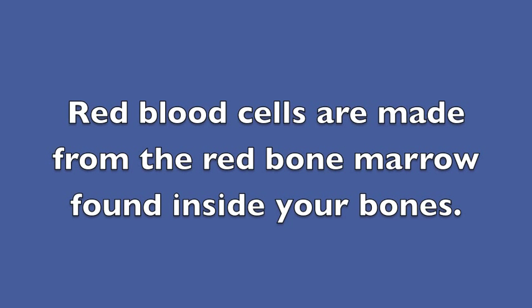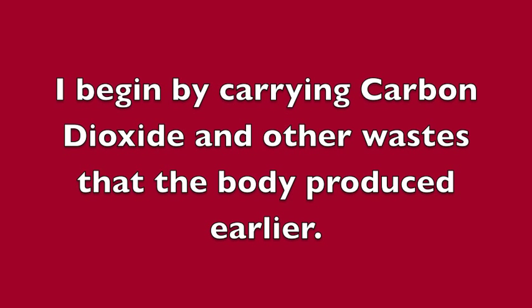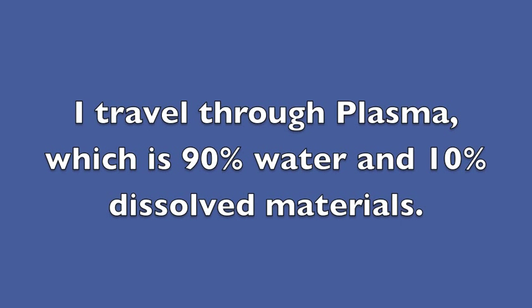My story begins in the red bone marrow found inside your bones. The plan is to send in the oxygen and glucose to the city's body parts and take their carbon dioxide and other waste for their safety. Glucose is a sugar found in the body that is produced by the digestive system.